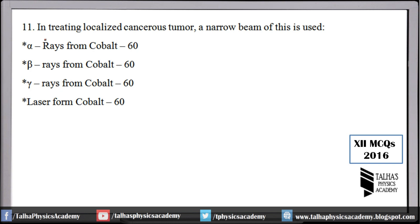Number 11: In treating a localized cancerous tumor, a narrow beam of which radiation is used — alpha rays from cobalt, beta rays from cobalt, gamma rays from cobalt, or laser from cobalt-60? Remember, the rays used are gamma rays — gamma rays from cobalt-60 are used to treat localized cancerous tumors.